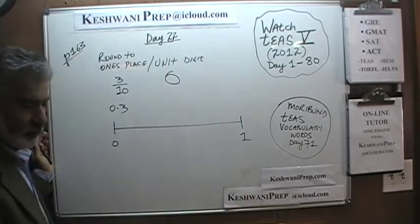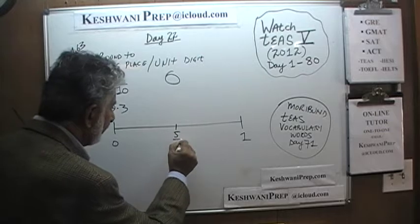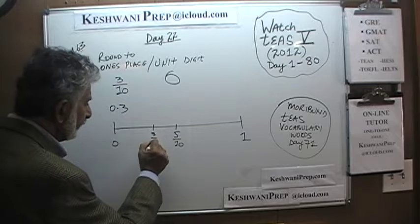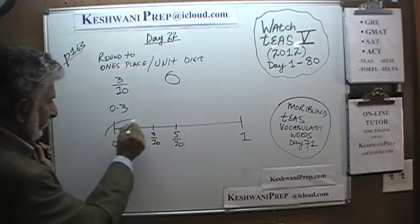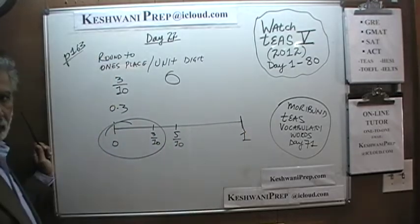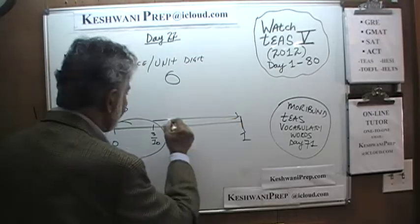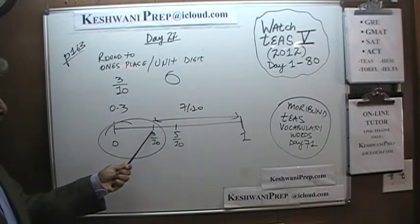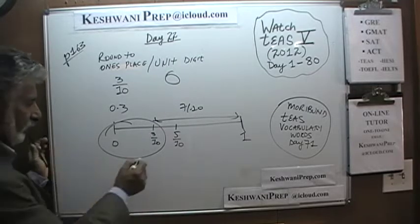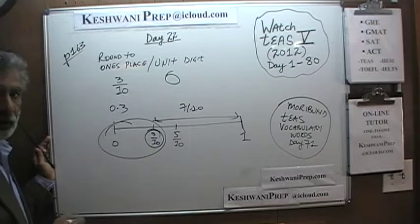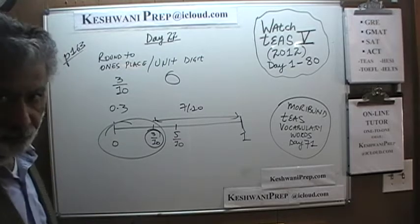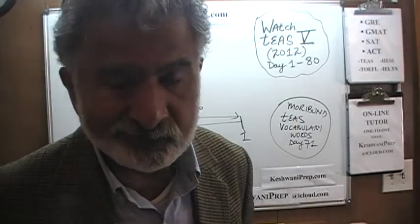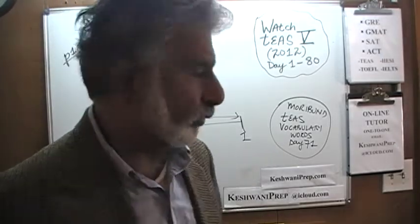Here is your 0, here is your 1, and here is 5 over 10. The question is where does 3 over 10 fall? It falls closer to 0 than it is to 1 — the difference to 1 is 7 tenths, while the difference to 0 is only 3 tenths. So when you round 3 tenths to the nearest one's, it becomes 0. Zero is the one's digit — it tells you how many 1's it has, and in this case it has 0 ones.